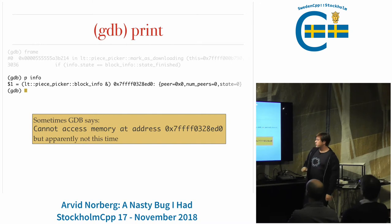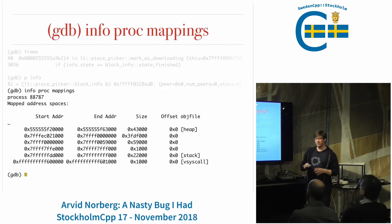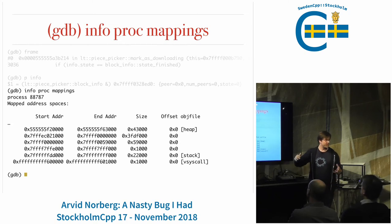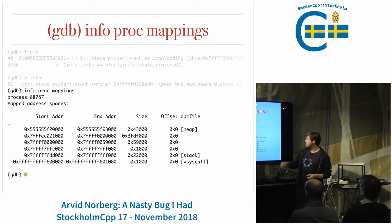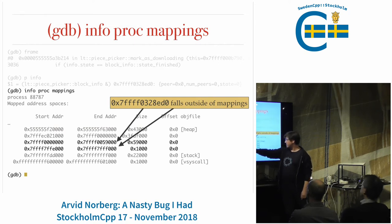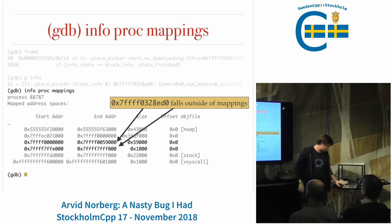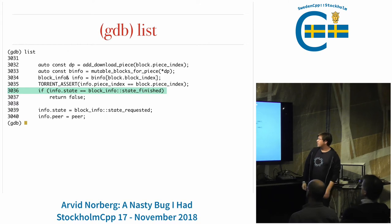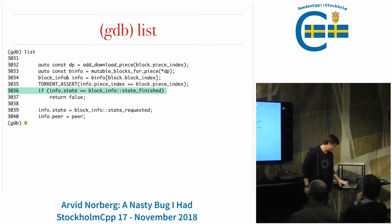I would have expected GDB to say it cannot access memory, but it didn't. You can validate the assumption that it's an invalid pointer using info proc mappings in GDB, which prints all memory addresses mapped in your process. The address falls in between two mapped regions, so it's outside valid memory - it's invalid. So now we know that info is a reference pointing to garbage.